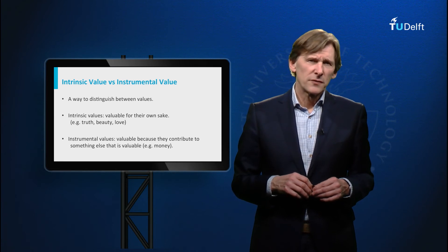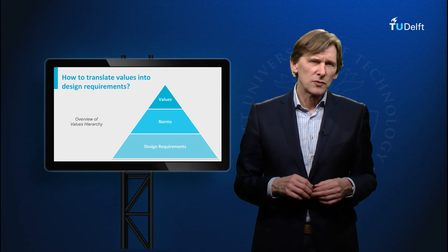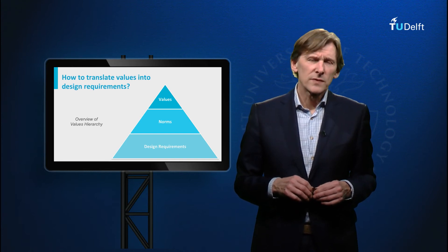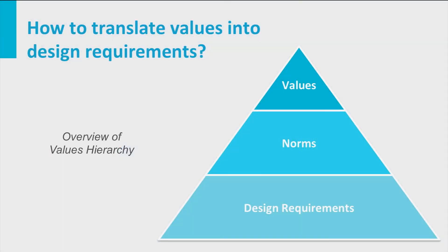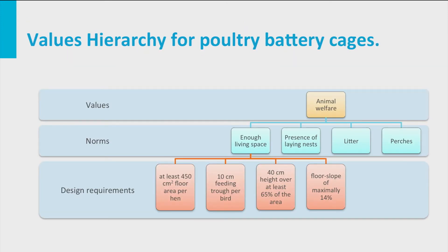Now let us turn to the third question: how to translate values into design requirements. For answering this question we will make use of a values hierarchy. A values hierarchy consists of three layers: values, norms, and design requirements. This is an example based on a European directive for the design and production of battery cages for laying hens. The directive was meant to guarantee the value of animal welfare, and you can see how this value is translated into several norms — like that chickens should have enough living space — which are then translated into more specific design requirements, such as at least 450 square centimeters of floor area per hen.